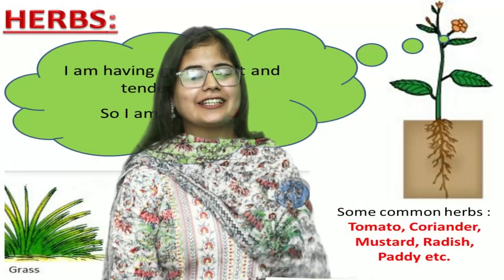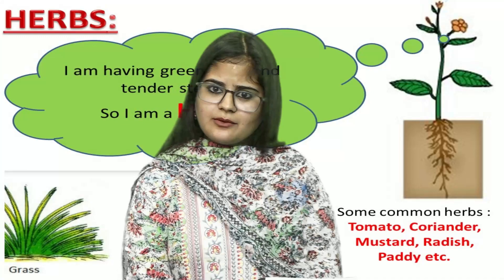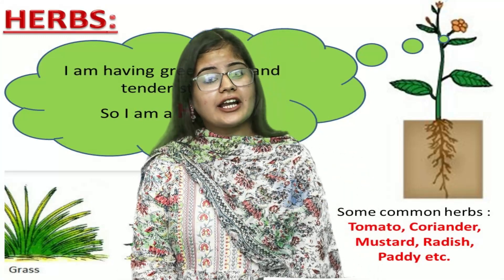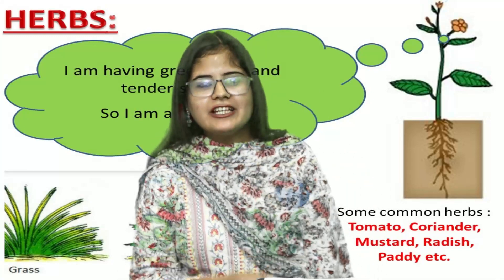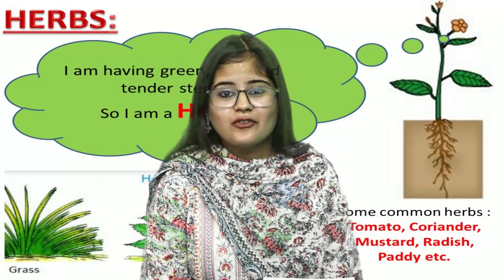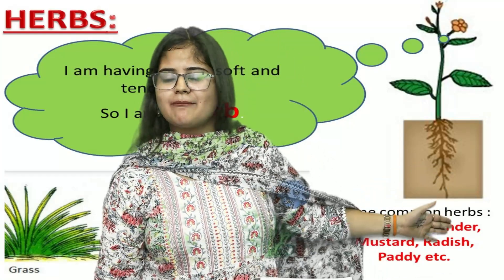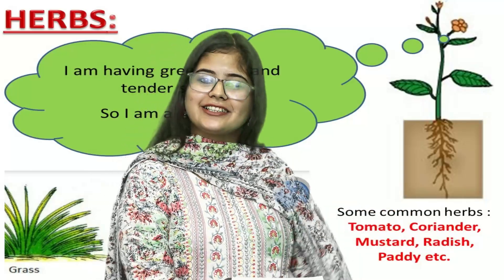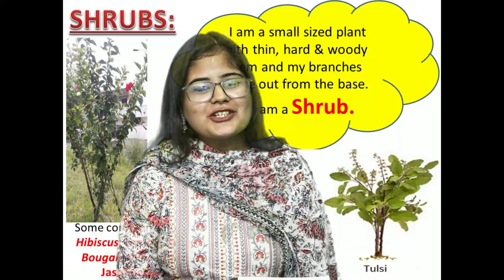The first classification is herbs. What are herbs? Herbs are those plants which are green and have a very weak, soft, and tender stem. For example, wheat and grass are herbs.